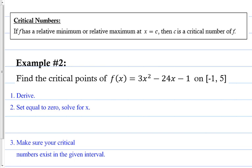Critical numbers: if f has a relative minimum or relative maximum at x = c, then c is a critical number of f. So if there is a max or min at a certain x value, that location — that x value — is considered a critical number.